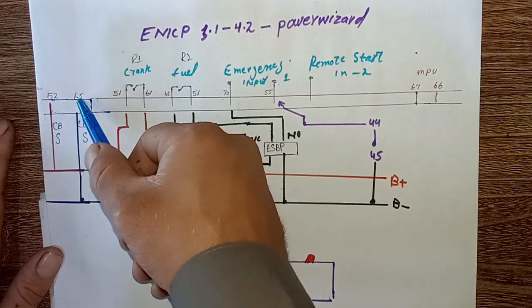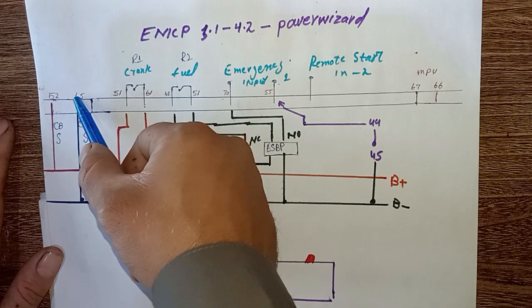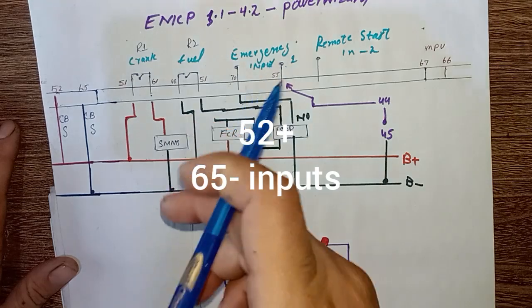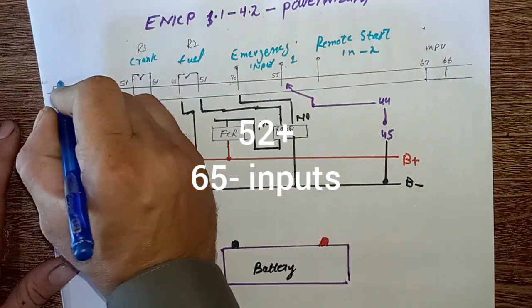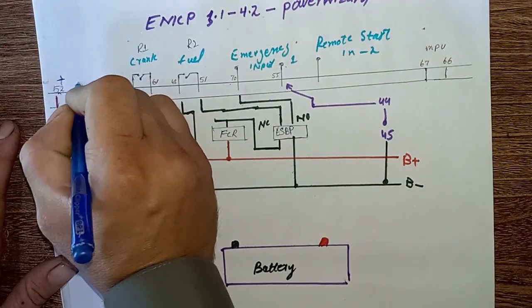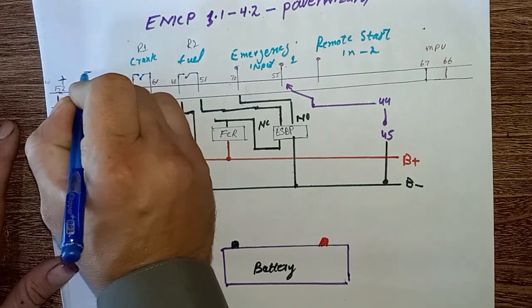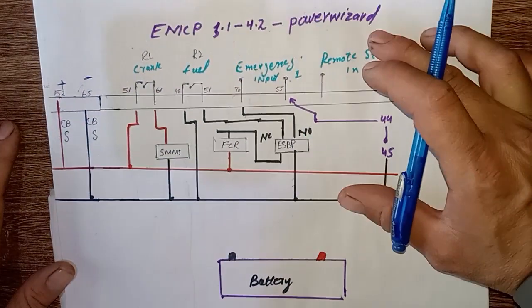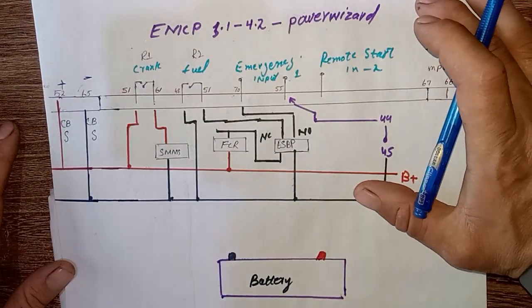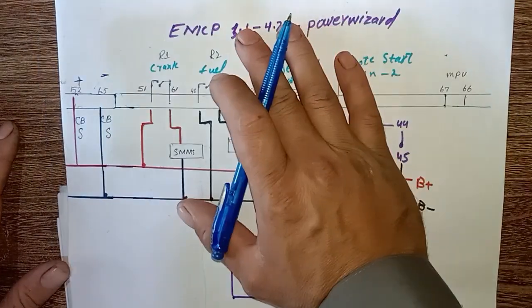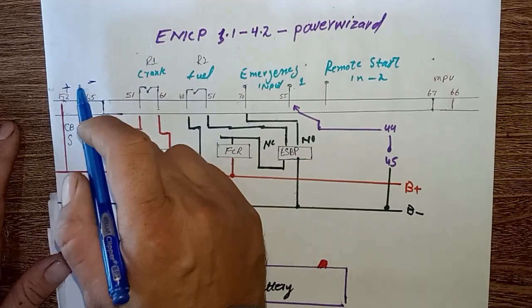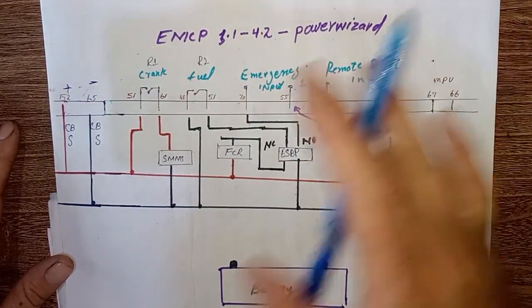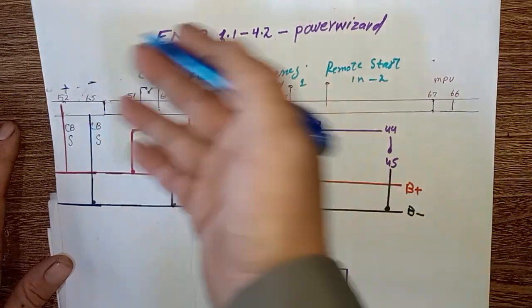Pin 51 and pin 52 - this is our input. Pin 52 is our battery positive, and pin 65 is our battery negative for turning on the controller. This is the controller power supply. You can connect this controller with 12 volt or 24 volt.